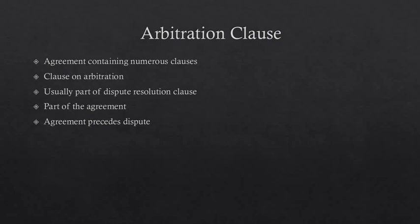Arbitration clauses are usually part of a main agreement, providing for reference of disputes that may arise in the future to arbitration. From a chronological point of view, the agreement comes first and then the disputes arise later.